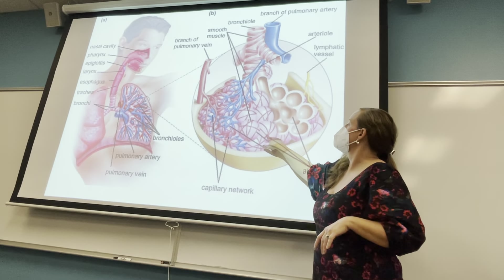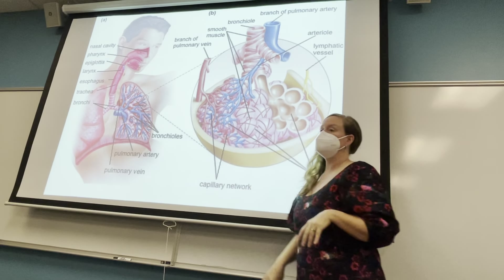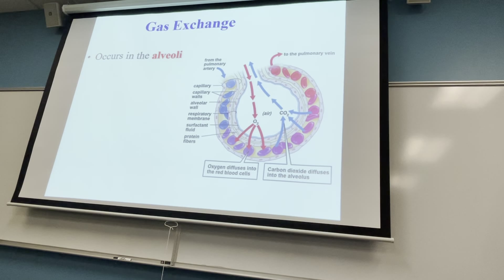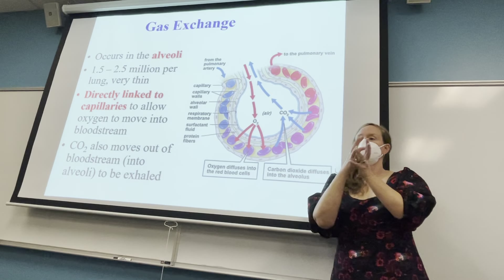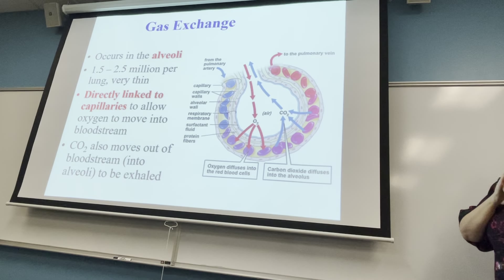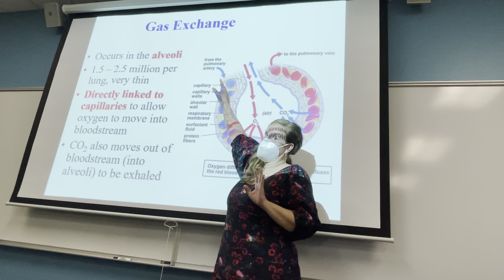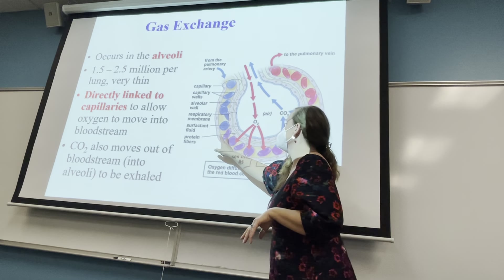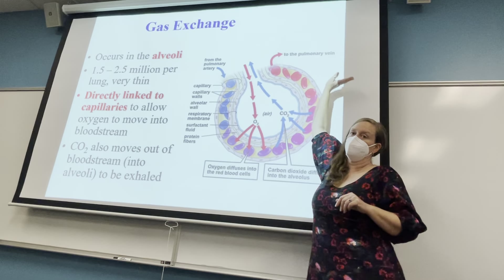Each alveolus is surrounded by blood vessels — you can see capillaries wrapping around them, showing that direct contact with the circulatory system. There are millions of alveoli in your lungs, depending on body size. Oxygen comes into the lungs via the pulmonary artery, gas exchange happens around each alveolus, and oxygenated blood goes out through the pulmonary vein back to the left side of the heart.